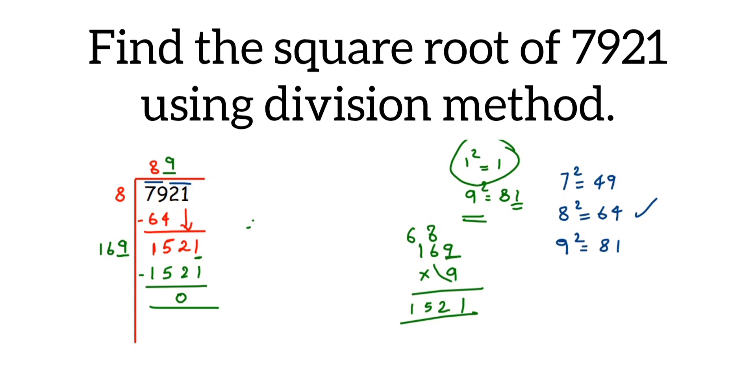So this is how we find the square root. Square root of 7921 equals 89. What we got here in the quotient will be the square root of that number. I hope this is clear now.